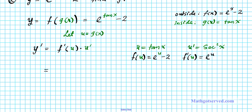So y prime equals f prime of u times u prime, which is e to the u times secant squared x. Are we done? No — remember y is a function of x, so we have to convert u back to its original form. Since u equals tan x, the final answer is y prime equals e to the tan x times secant squared x.